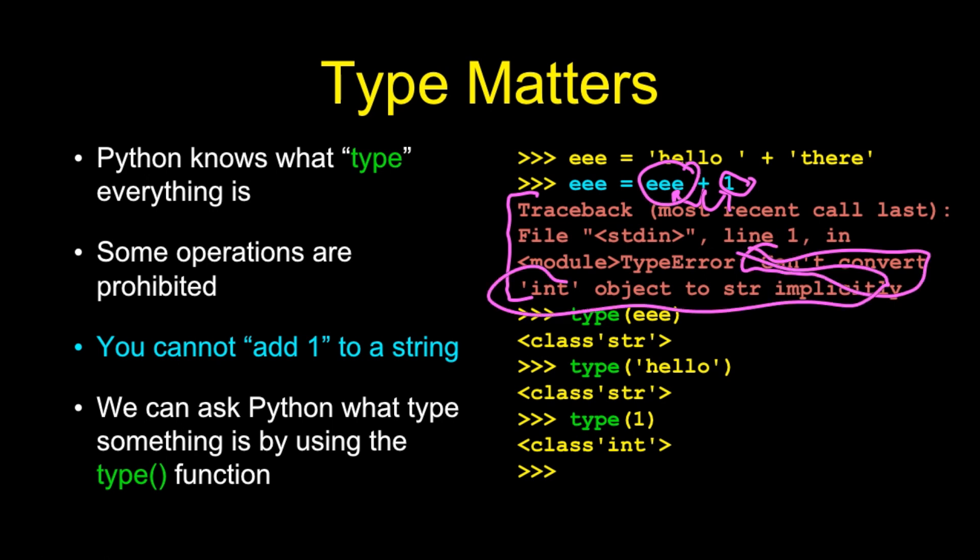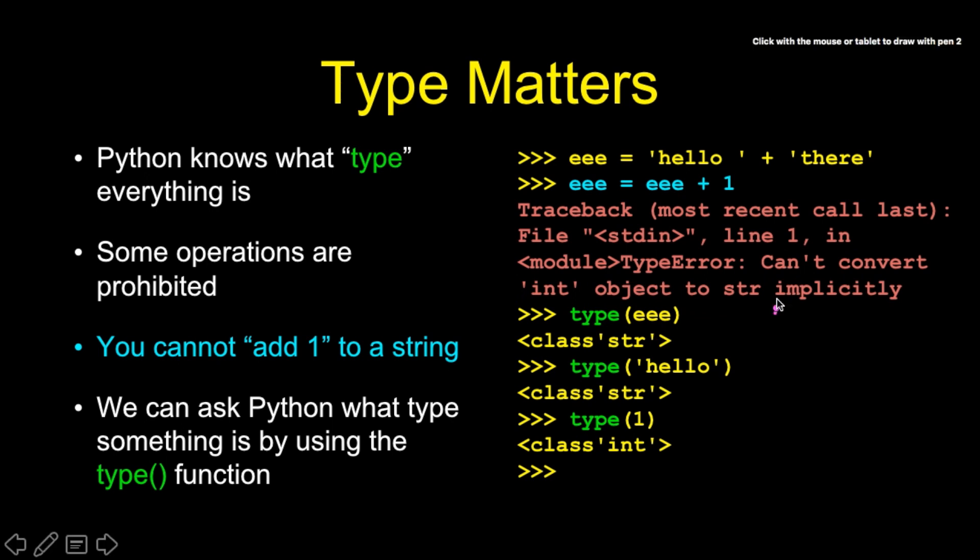If Python is so grumpy about types, then we should be able to ask it about types. It turns out that there is, inside Python, a built-in function called type, T-Y-P-E. We can pass into type. The syntax is calling a built-in function named type. Parenthesis is the parameter that we're passing to it. We're saying, hey, tell me something about the type of the variable. This is a function. The parentheses are part of the function call. And it says that would be of class string.